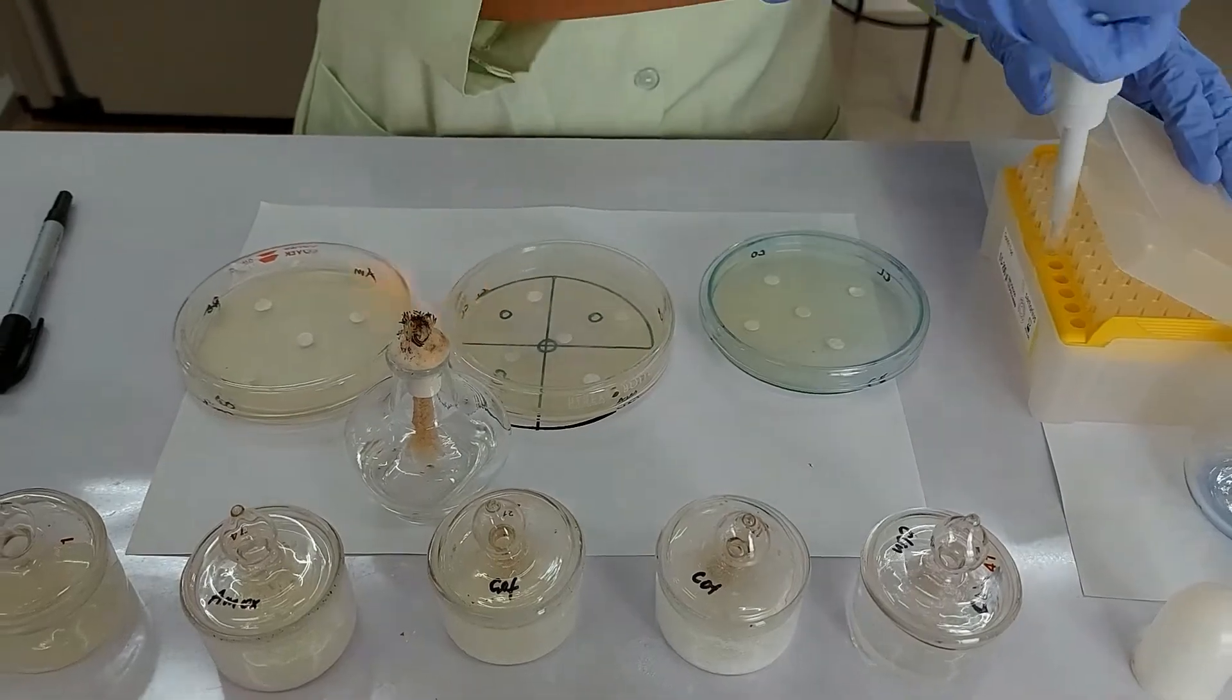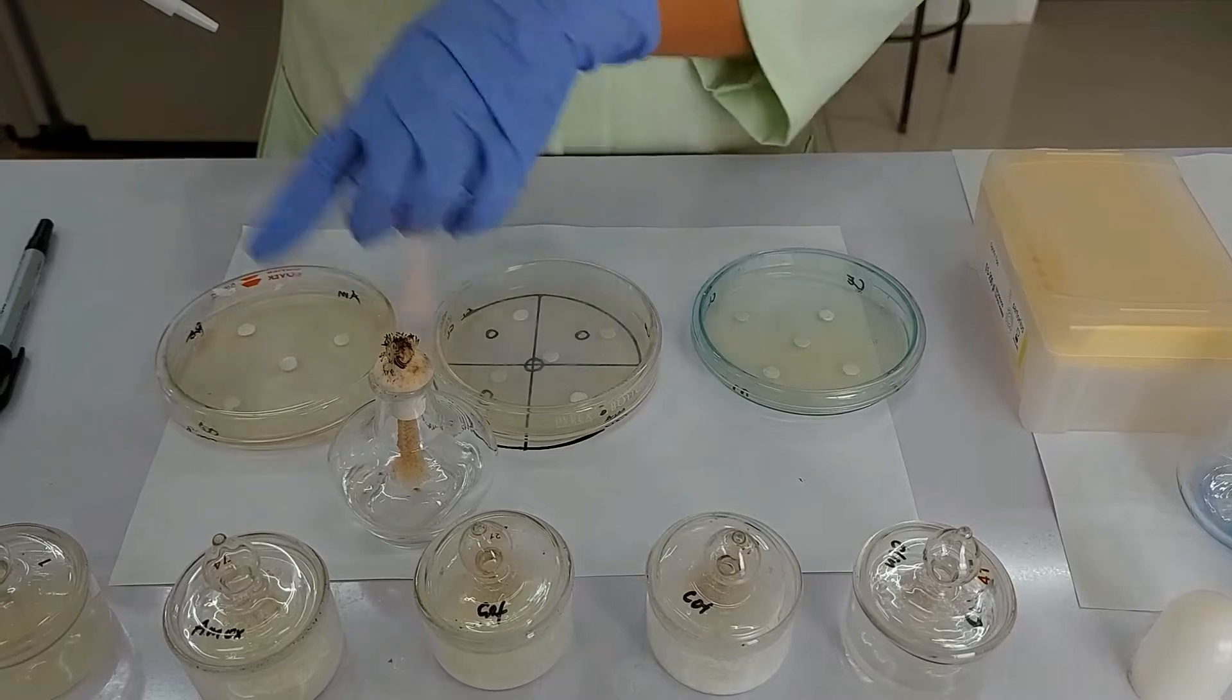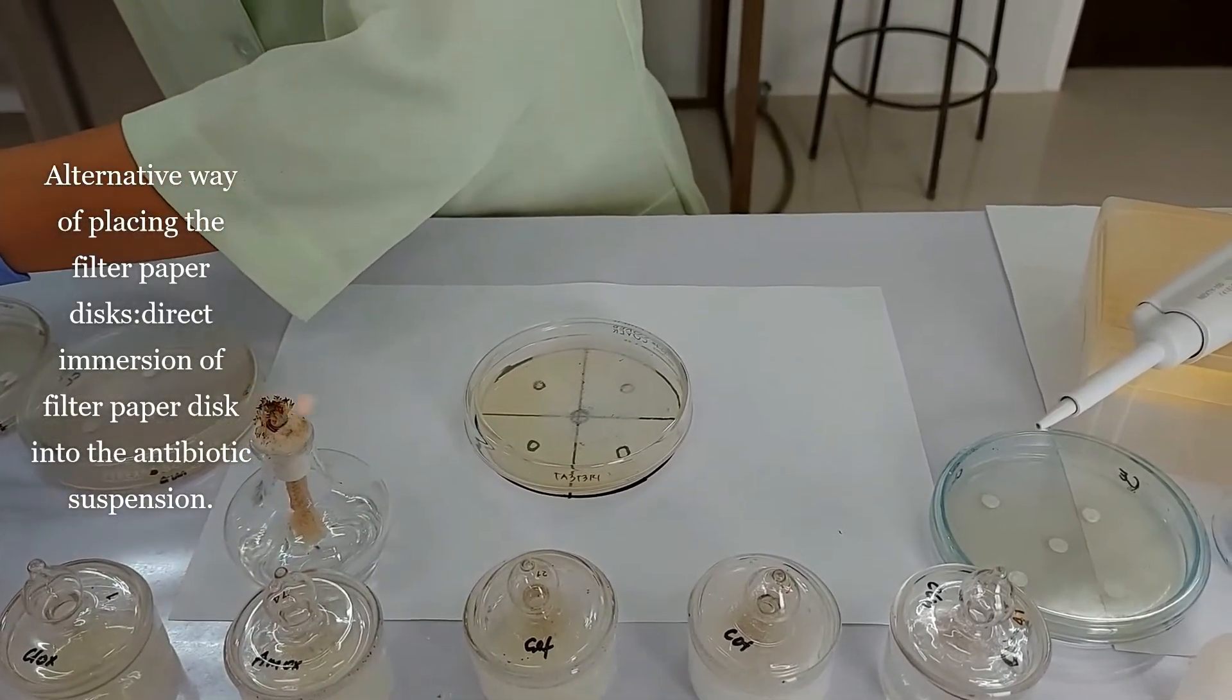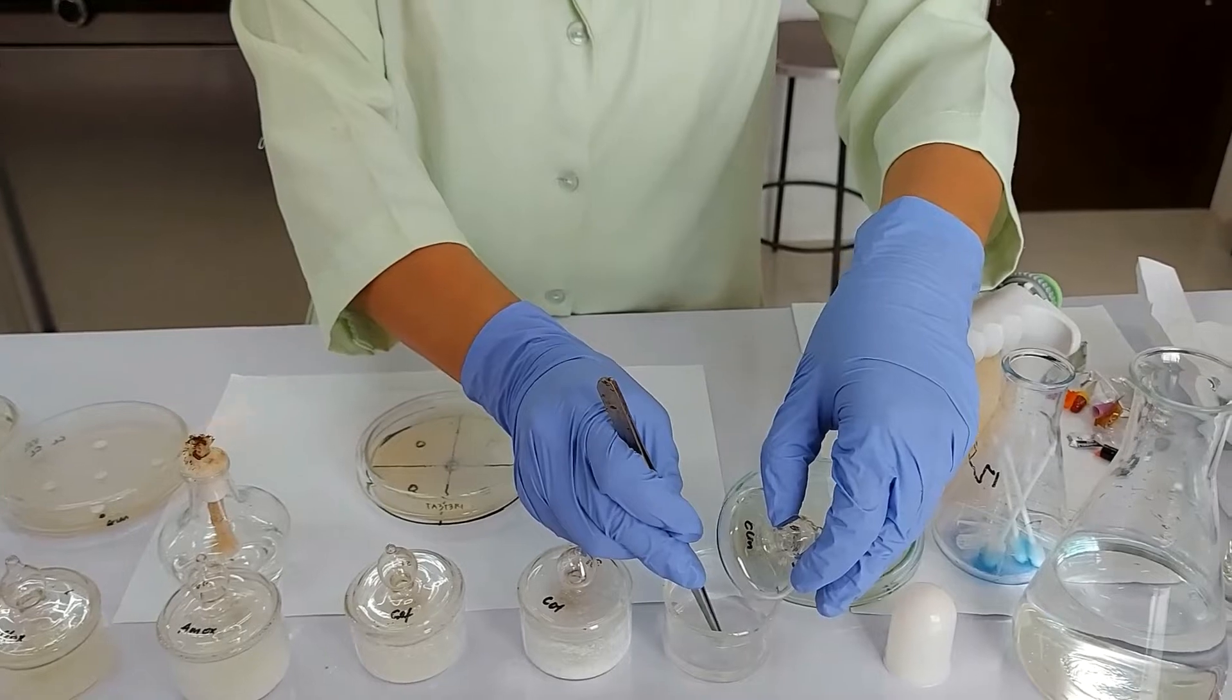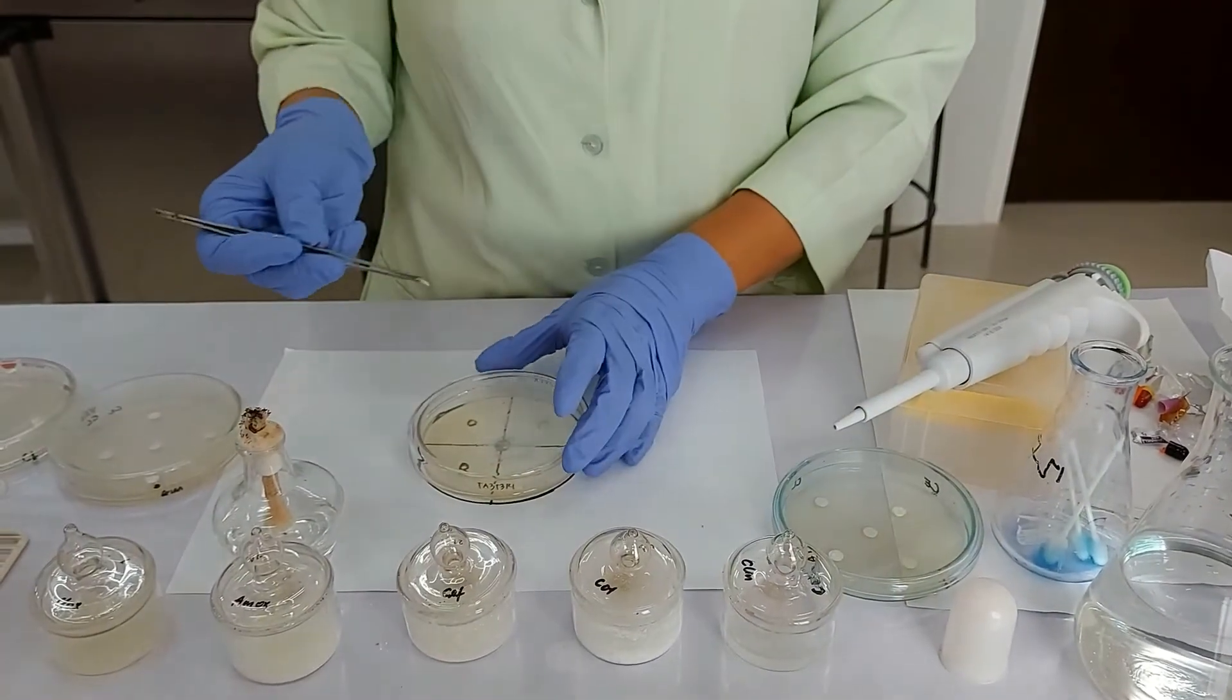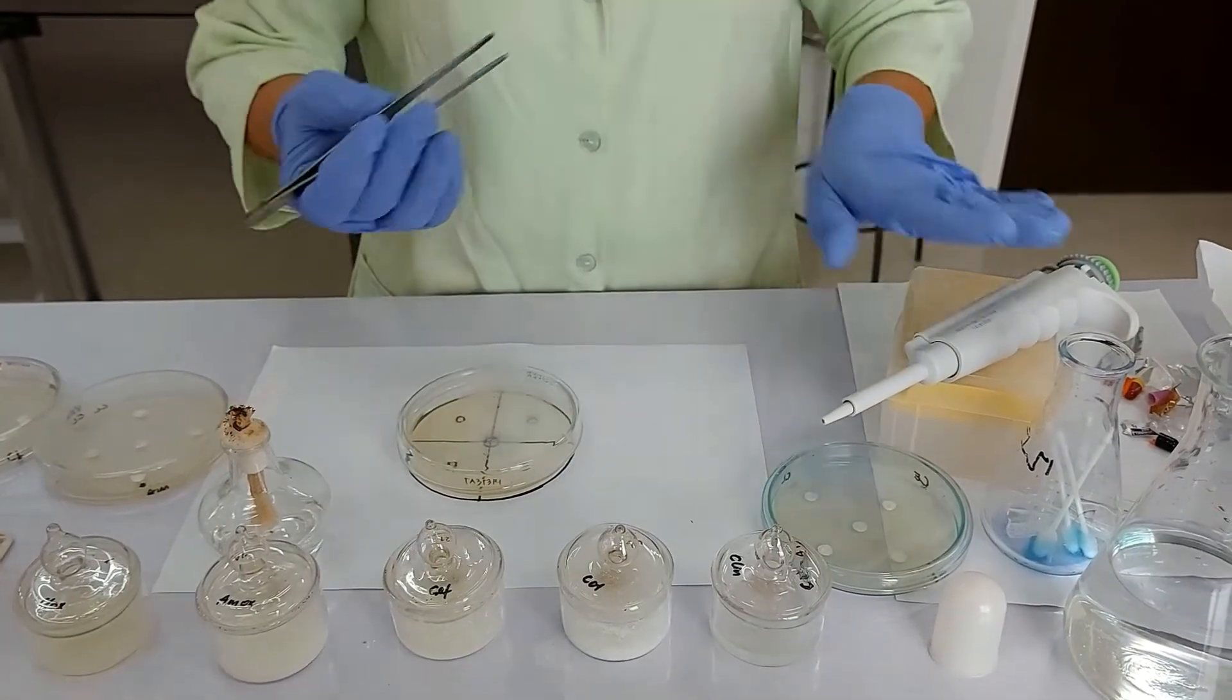We have to do this for all of the filter paper discs that we have in here. Another way by which we inoculate this is we just simply get a filter paper and then you immerse this directly in here. Make sure you drain the excess liquid by touching the side of your container, and then you can directly put it on the surface of the agar. Sometimes this is easier, especially if you don't have a micropipette.